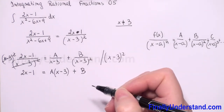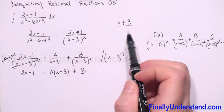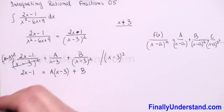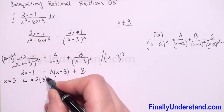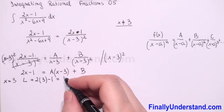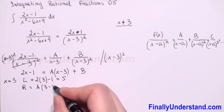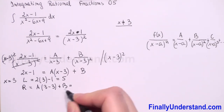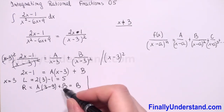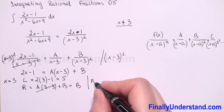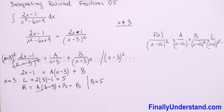To solve this equation we substitute x equals 3. On the left side: 2 times 3 minus 1 equals 6 minus 1 equals 5. On the right side: A times (3 minus 3) plus B equals 0 times A plus B equals B. Since left equals right, we have B equals 5.